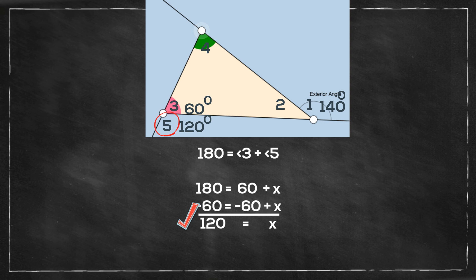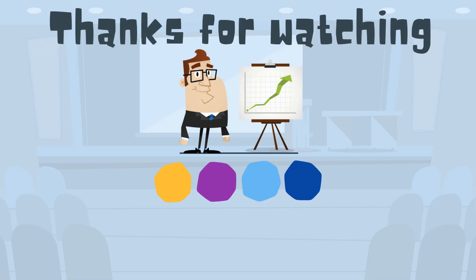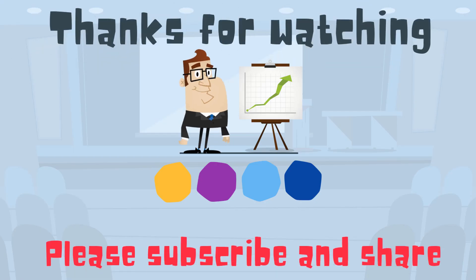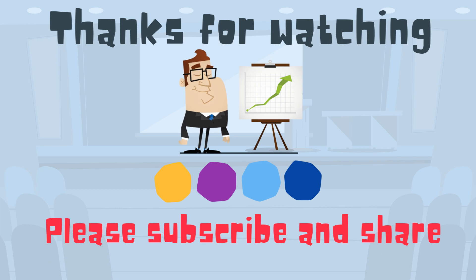So there we go. The exterior angle measure of a triangle and you can use some of its properties in order to find missing angles. Don't forget to subscribe to our channel and share.